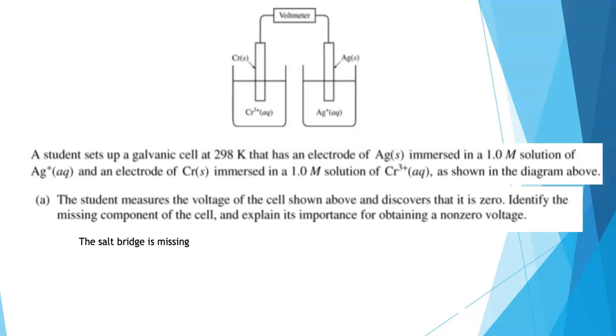Well, what's missing is the salt bridge. The salt bridge connects the two solutions with ions that can move, and it allows ions to move between the half cells, maintaining charge balance. And that is what you needed to say to earn the point for part A.